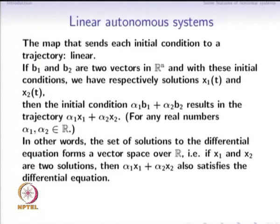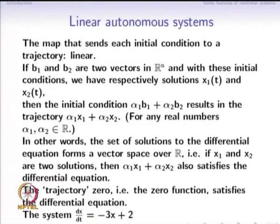We can ask: is the trajectory x ≡ 0 a solution to the differential equation? For example, substituting x ≡ 0 into d/dt(x) = −3x + 2 gives 0 = 2, which is false. So the zero function is not a solution, and hence this autonomous system is not a linear autonomous system.